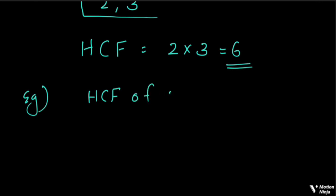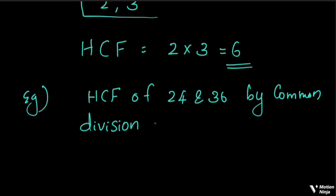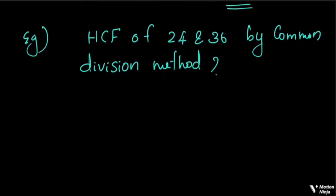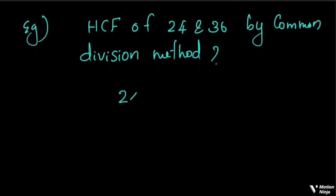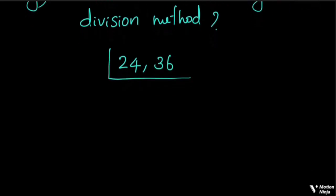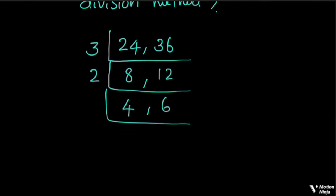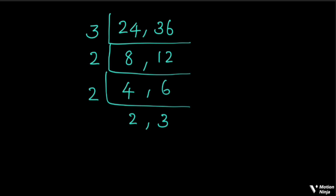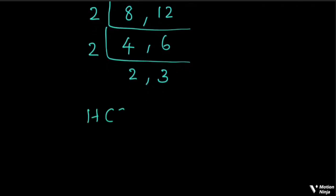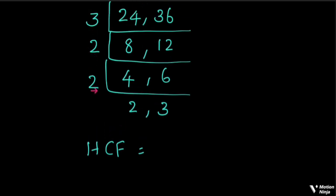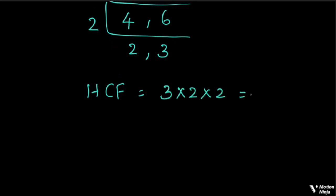Find HCF of 24 and 36 by the common division method. We divide using the common division method. The two numbers are divisible by 3, then by 2, then by 2 again. We stop the division when no more common division is possible. HCF is equal to 3 × 2 × 2, which is equal to 12. This is our answer.